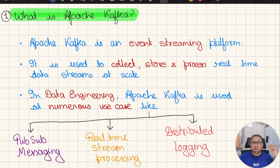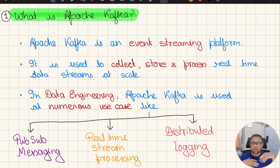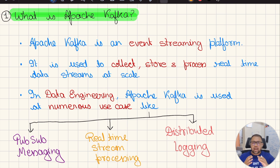Welcome to the Big Data Show. Today we are going to discuss what is Apache Kafka. I have heard many definitions of this from different data engineers. Someone says it is a messaging queue, someone says it is a pubsub model, but according to me the most accurate definition of Apache Kafka is: Apache Kafka is an event streaming platform which is used to collect, store and process real-time data streams at scale.